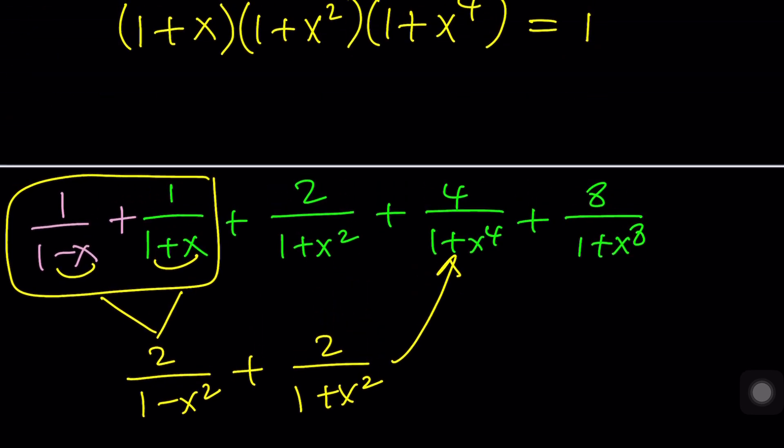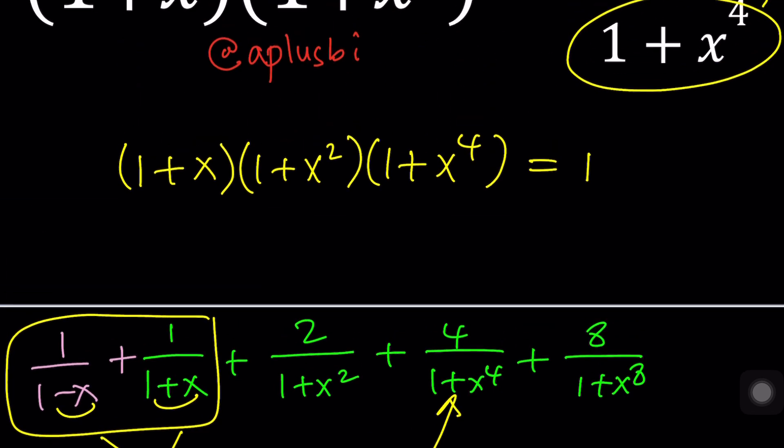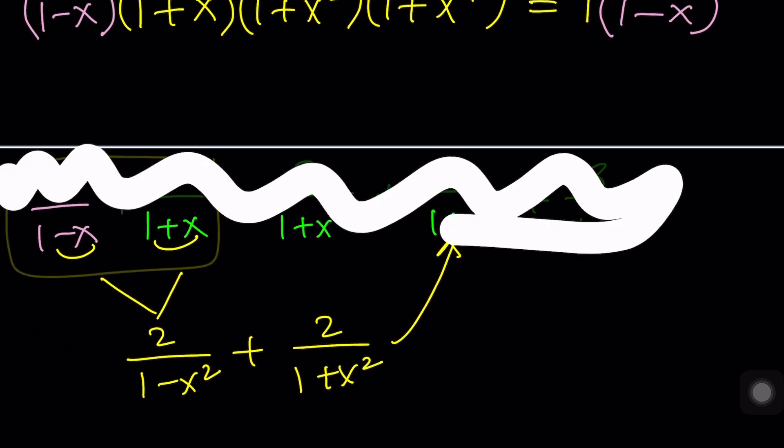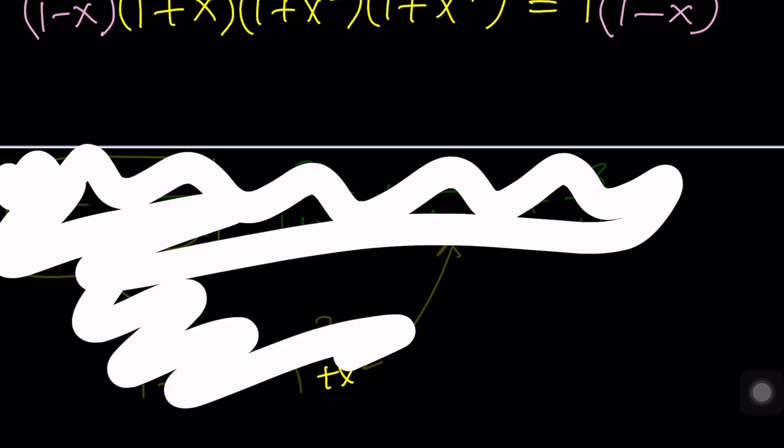Guess what? We're going to add it to the equation. Not adding adding, but we're going to introduce 1 minus x to the equation on both sides by way of multiplication. And the reason behind that is because this basically makes it a lot easier to deal with. Take a look.